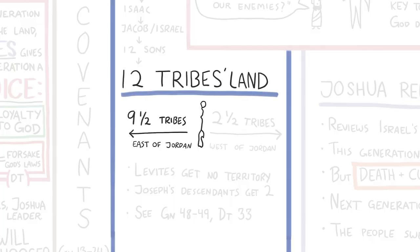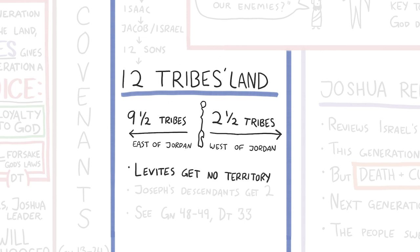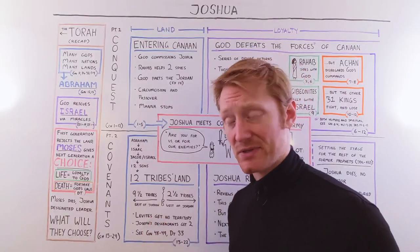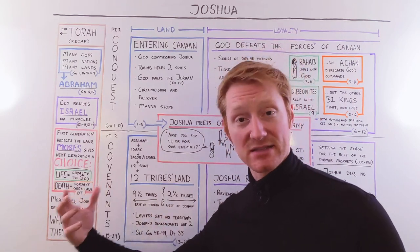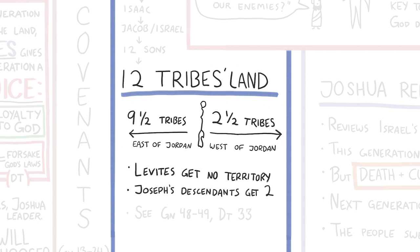Nine and a half tribes take land west of Jordan, and two and a half tribes were given land east of Jordan by Moses back in Deuteronomy. A couple of caveats: the tribe of Levi doesn't get a physical territory because their inheritance was maintaining the tabernacle for Israel's God. And while Levi doesn't get the territory, the descendants of Joseph get two territories — Ephraim and Manasseh — so the math works out. You can learn more about this in Genesis 48 and 49 and Deuteronomy 33, which have lots of blessings and descriptions of these tribes.